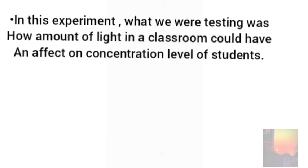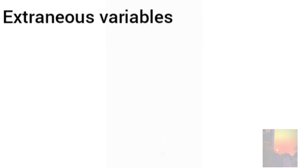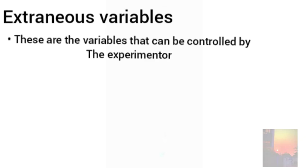In an experiment such as this where we are testing for concentration level of students, there can be many other factors that can affect the concentration level of students other than light. The first type of variables we are going to be talking about are extraneous variables. These variables are known as extraneous variables as they could have possibly affected the research in some way, but the experimenter could have controlled them.